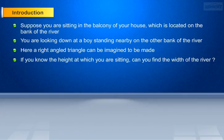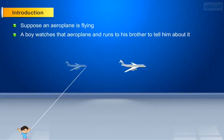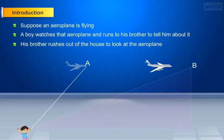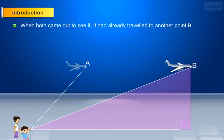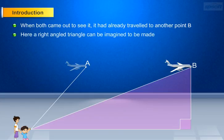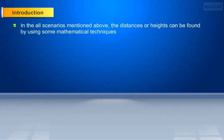Let us consider another scenario. Suppose an aeroplane is flying. A boy watches that aeroplane and runs to his brother to tell him about it. His brother rushes out of the house to look at the aeroplane. When the boy had spotted the aeroplane initially, it was at point A. When both came out to see it, it had already travelled to another point B. Here, a right angle triangle can be imagined to be made. Can you find the height of the plane at point B from the ground? In all the scenarios mentioned above, the distances or heights can be found by using some mathematical techniques.